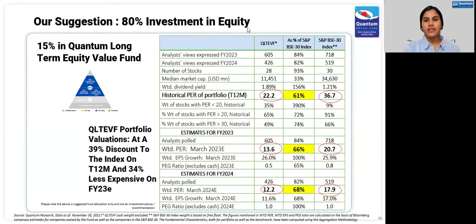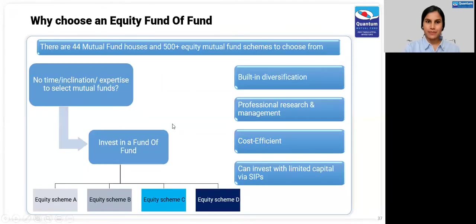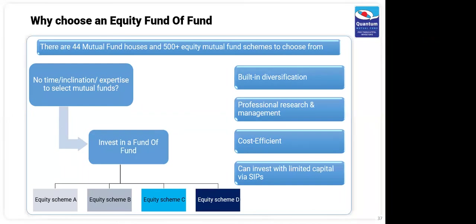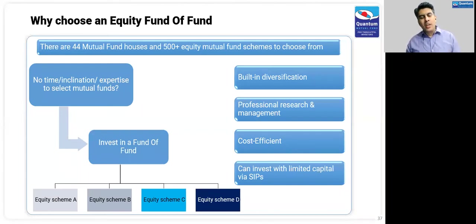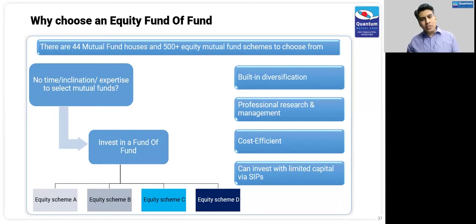Thanks, Nilesh. Chirag, can I request you to take us through the other ways our investors can take exposure to equities? A large portion of your equity allocation has to be spread across different styles and different fund managers to give you that diversification. Why do people invest through mutual funds? Because they either don't have time, inclination, or expertise to do the research required when putting hard-earned money to work. Similarly, when there are so many equity funds out there, which are the few schemes you can invest in to build a portfolio for the long term that gives you diversification, professional research and management, consistent performance, and cost efficiency even with limited capital?